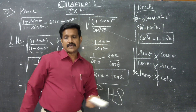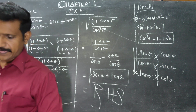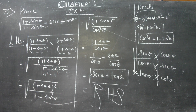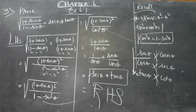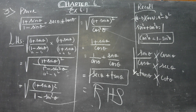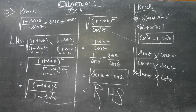Sin by cos is equal to tan theta, so we get sec theta plus tan theta, which is our RHS. For doing this sum, you need three formulas: (A plus B)(A minus B) equals A squared minus B squared, cos squared theta equals 1 minus sin squared theta, and sin by cos equals tan. Chapter number 6, sum number 3, first subdivision — very beautiful. Thank you.